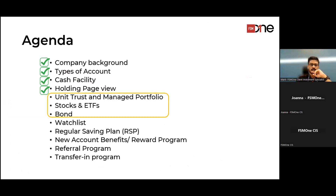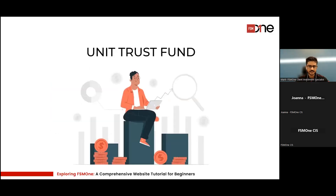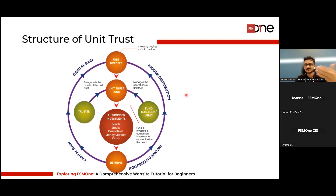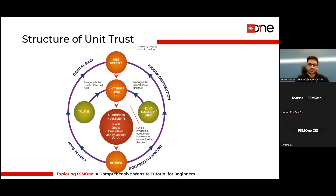We've covered four items: company background, types of accounts, cash facilities, and holding page view. Now we move on to products: unit trust, managed portfolio, stocks, ETF, and bonds. I'll explain each product and why you may consider them. The first product is unit trust — most of you likely have experience with it. Let me explain the structure: as a unit holder/investor, you invest into a unit trust fund managed by a UTMC (unit trust management company), while a trustee safeguards the assets.